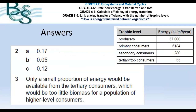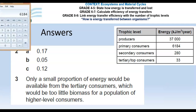Let's have a look at the answers. Question 2a: calculate the energy transfer efficiency to two decimal places from producers to primary consumers. We take the energy stored in the biomass of the primary consumer, which is 6184, and divide that by the total energy supplied from the producer, which is 37,000. That gives us a value of 0.16713, and to two decimal places our answer is 0.17. Part B: the secondary consumer value is 280, divided by the energy provided from the primary consumer, which is 6184. That gives a value of 0.04527, so to two decimal places that's 0.05.